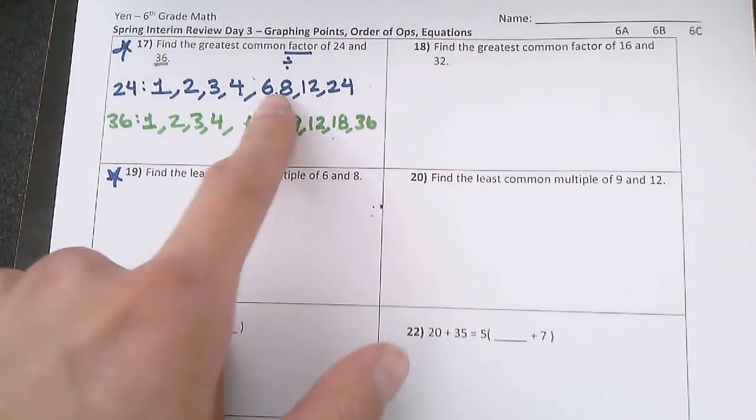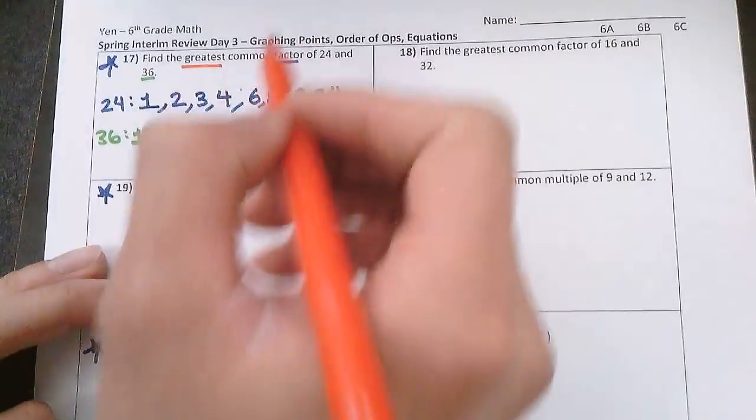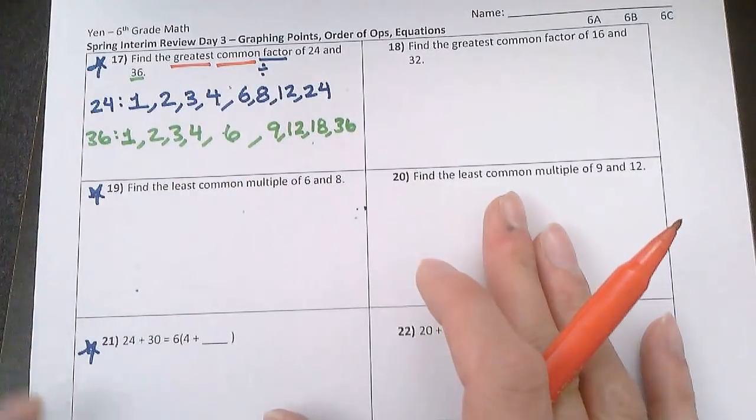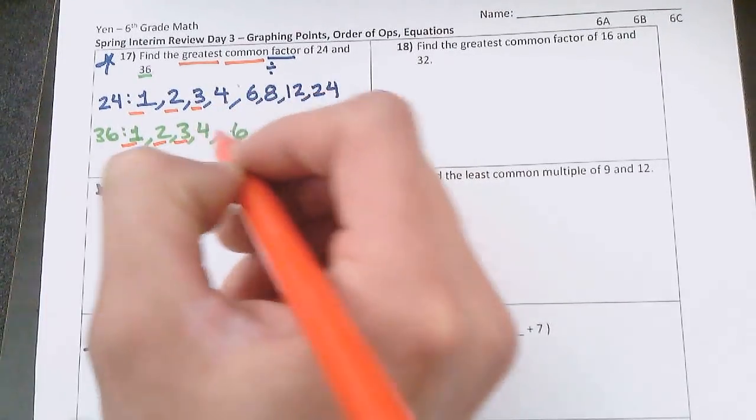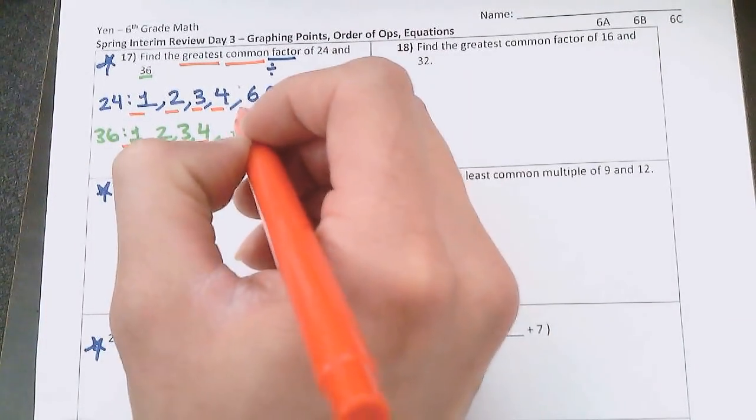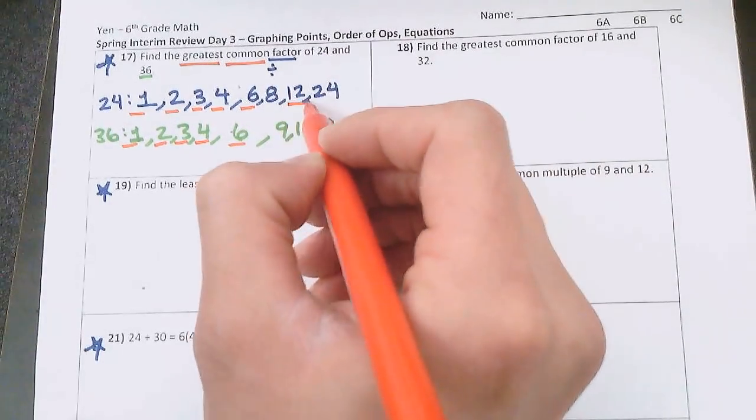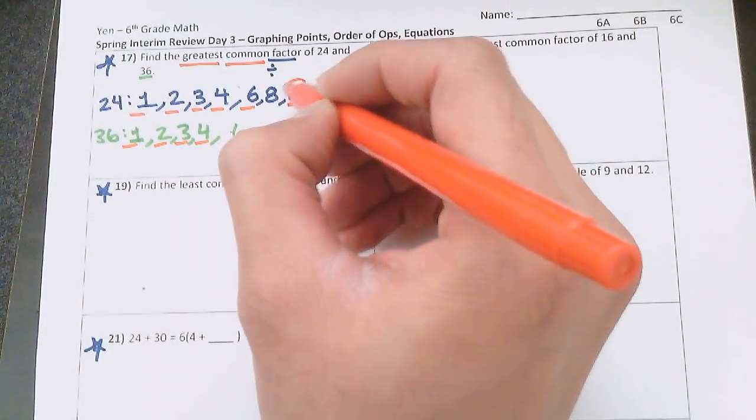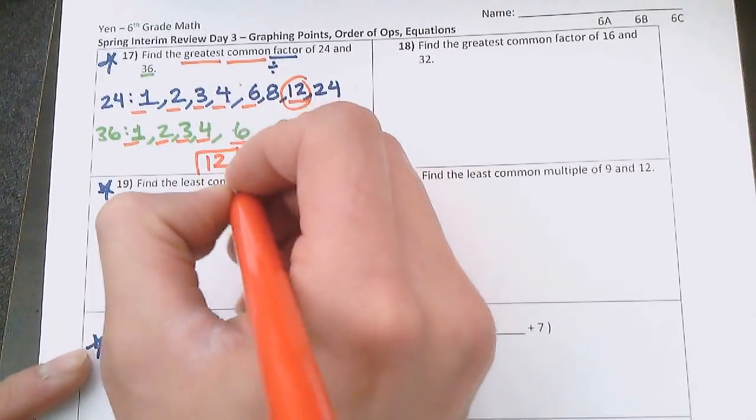Now I have my factors of 24 and my factors of 36. I'm looking for the greatest, so the biggest, and common. If you have something in common, both numbers have it. So the biggest factor that is here in both numbers. I know that 1 is a common factor, 2 is a common factor, 3 is a common factor, 4 is a common factor, 6 is a common factor. 12 is a common factor. So 12 is the biggest of all the common factors. The greatest common factor among these two numbers is 12.